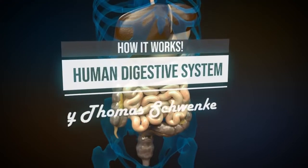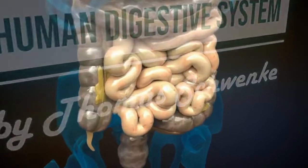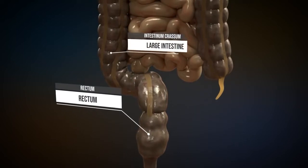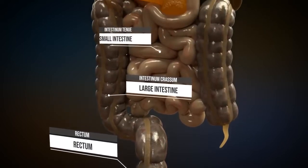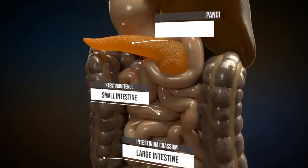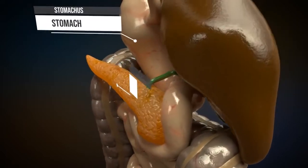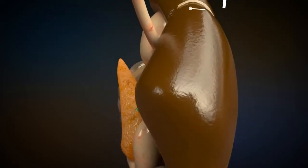The human digestive system is very complex and has evolved over millions of years. It basically consists of the rectum, the large intestine, the small intestine, the pancreas, the stomach also called gaster and ventriculus, and the liver with the gallbladder.